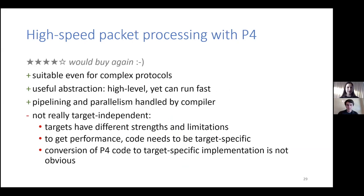So in terms of high-speed packet processing with P4, I am quite satisfied with P4. I would recommend it. It is suitable for even complex protocols. We were able to express the complexity of SCION in P4. And it is a useful abstraction, because it is sufficiently high level to actually save time. Yet it can run very fast in hardware. We were able to achieve line rate. And the pipelining and parallelism is handled by the compiler. So that's useful because I don't have to think about, okay, how do I size buffers? How exactly do I want to deal with this? Ideally, this saves a lot of work.